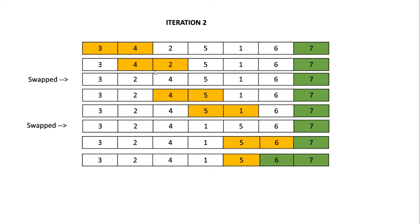In iteration 2, we continue the same logic. We compare the first two elements 3 and 4 — no swap required. Then 4 and 2 — 4 is greater, so a swap happens. Then 4 and 5 — no swap. Then 5 and 1 — swap required, giving 1 and 5. Then 5 and 6 — no swap. At the end of iteration 2, the second element from the rightmost is locked since we don't need to consider it anymore.